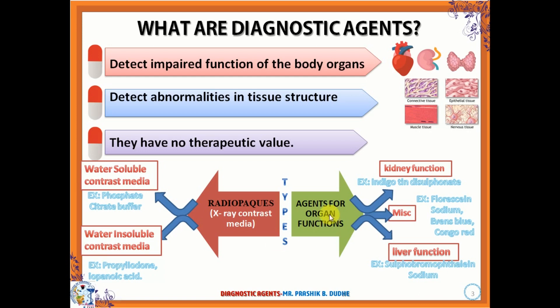The agents for organ function test are used on different organs. In the case of kidney function, indigo tin disulfonate is used. In the case of liver function test, when we want to check whether the liver is functioning properly, agents like sulfobromothalene sodium are used. There are also a number of other agents used such as fluorescein sodium, Evans blue, and Congo red for detection of various body organs.